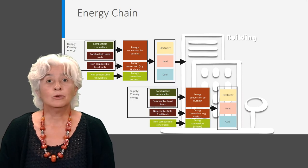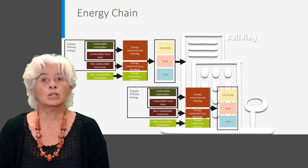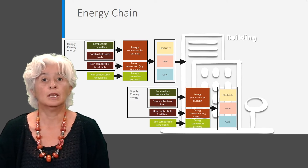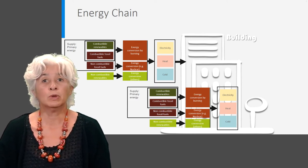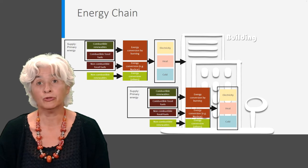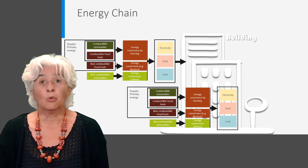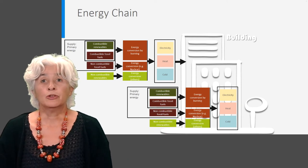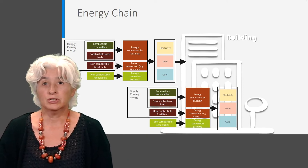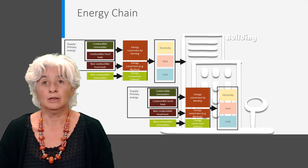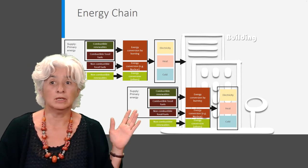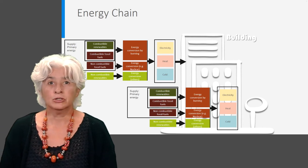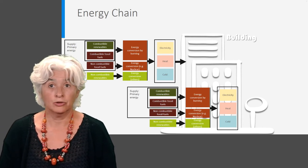First, let me remind you of the energy chain in which primary energy is used to supply electricity, heat, cold, and various renewable and non-renewable fuels to a building. The fuels are supplied to the energy conversion system inside the building, providing heat, electricity, and cold. Energy efficient building concepts rely on this energy chain.